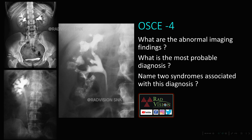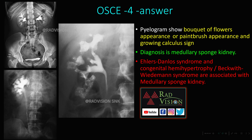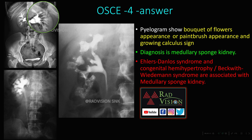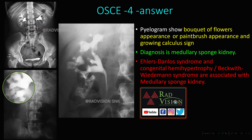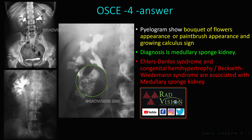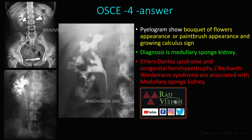Next, this is the fourth OSCE. What are the abnormal imaging findings, most probable diagnosis, and named syndromes? Here you can see multiple contrast-filled tubules noted — these show a streaky, paintbrush-type appearance. These multiple abnormal paintbrush appearances form a bouquet-of-flowers appearance. Also visible is the growing calculus sign, where there is a dilated calyx with calcifications — calyxeal diverticula with calcifications leading to the growing calculus sign. All these features — paintbrush type appearance, bouquet-of-flowers appearance, and growing calculus sign — are seen in medullary sponge kidney. Associated syndromes are Caroli syndrome and congenital hemihypertrophy or Beckwith-Wiedemann syndrome.